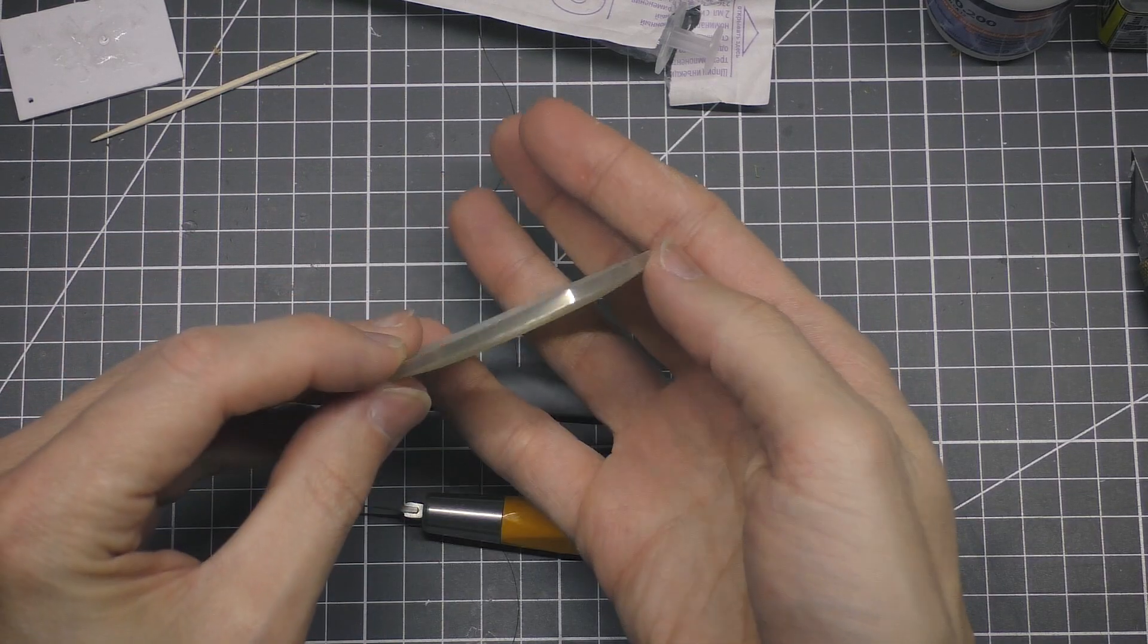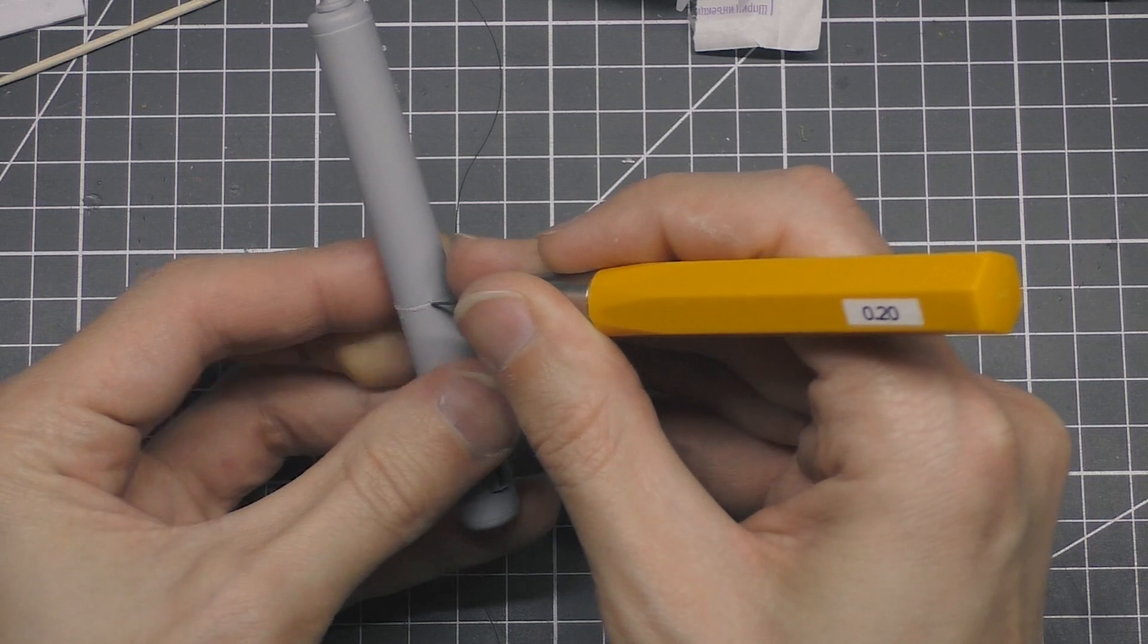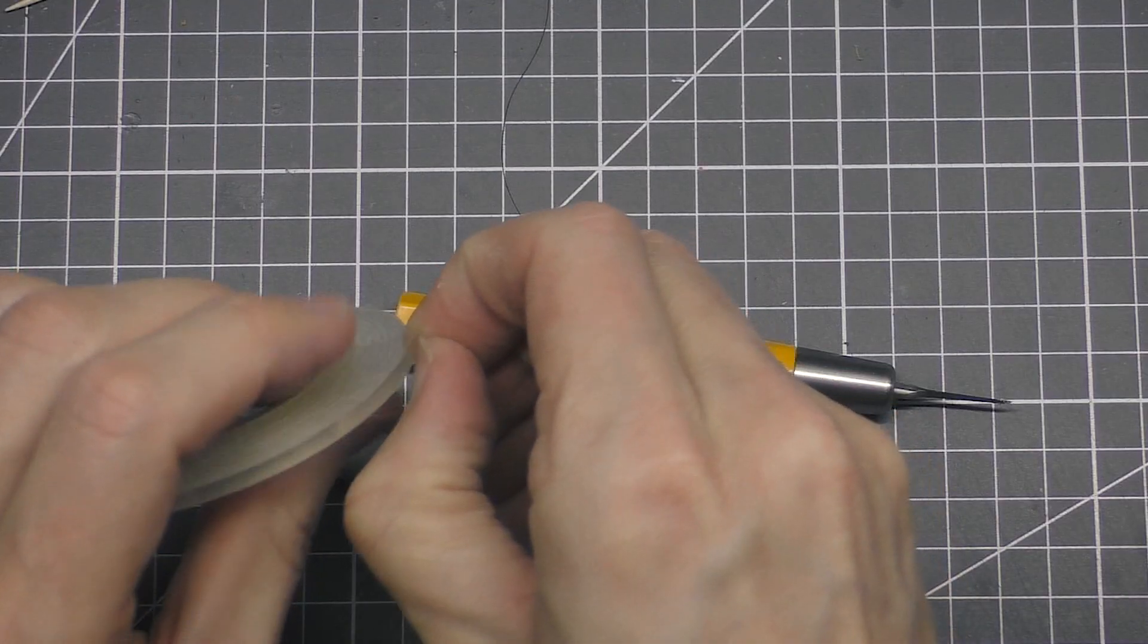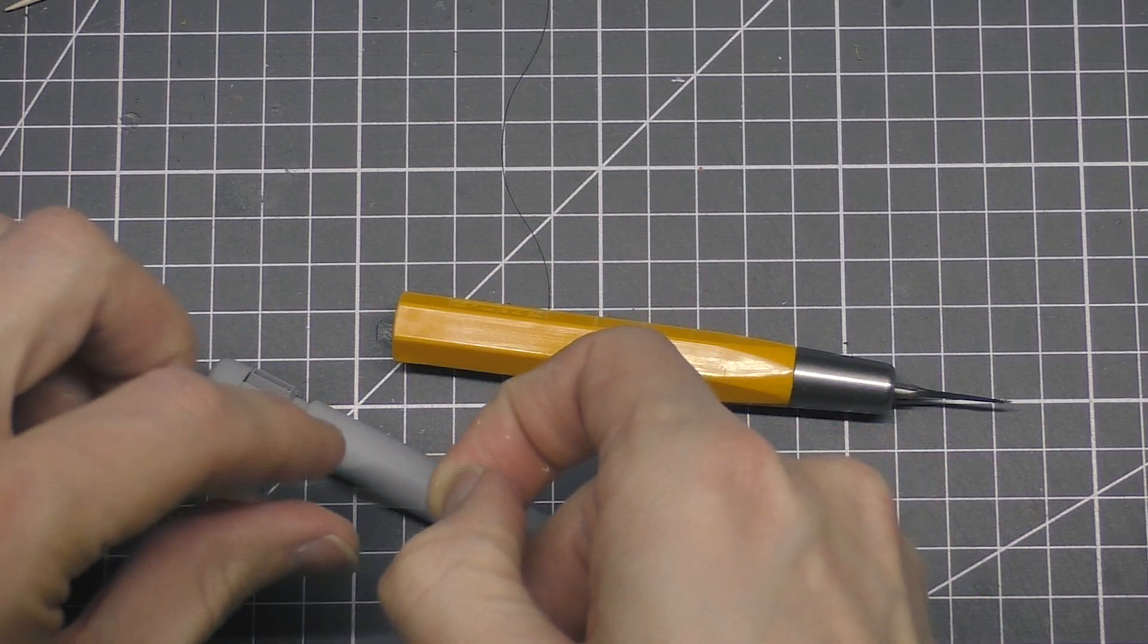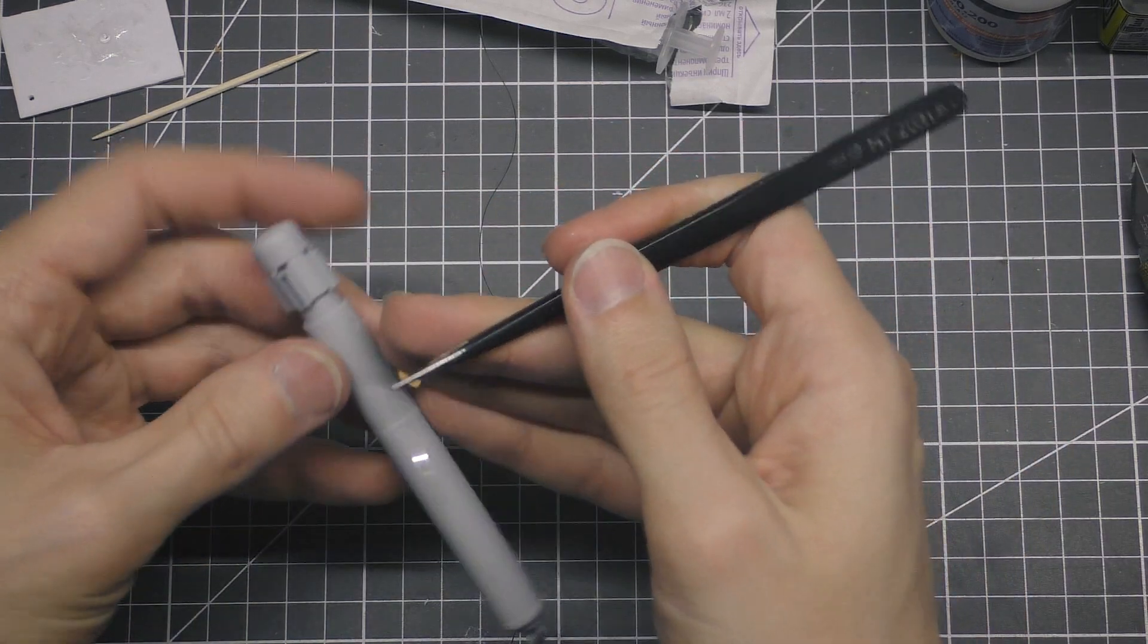I decided to do some scribing. I'm gonna be using different BMC chisels and HiQ parts guide tape 3 and 6 mm. I'll start with 0.2 chisel, which will be my main one and simply rescribe existing panel lines first.